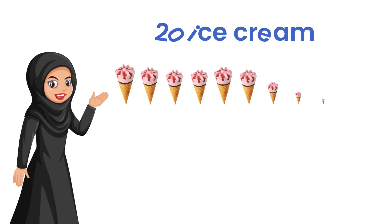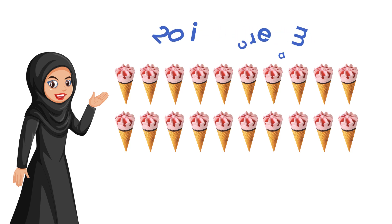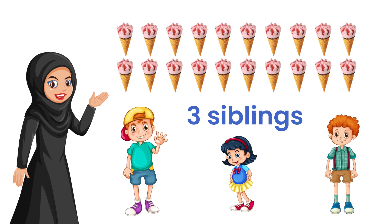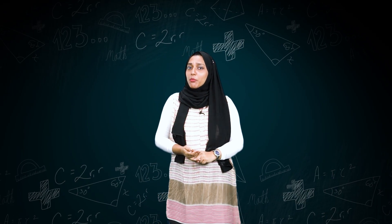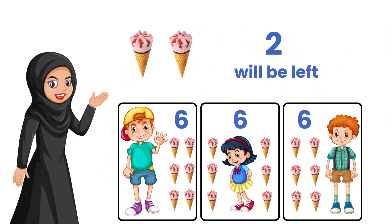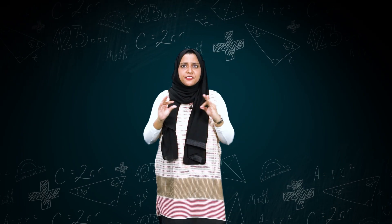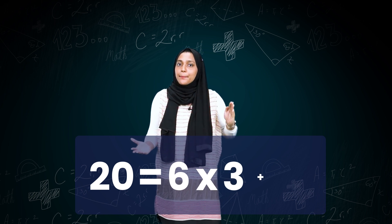Suppose if you have 20 ice creams, now you want to divide these ice creams among your three siblings. So how much does each one get? Each will get six and two will be left out. The division statement for this problem can be written as 20 equal to 6 into 3 plus 2.